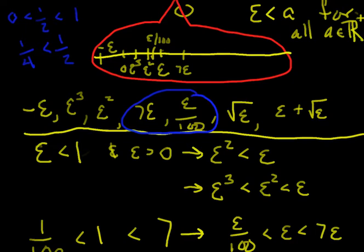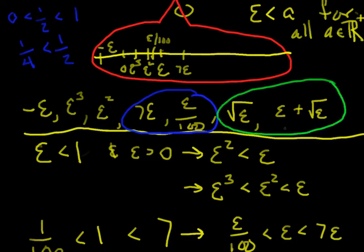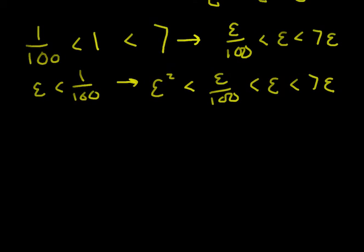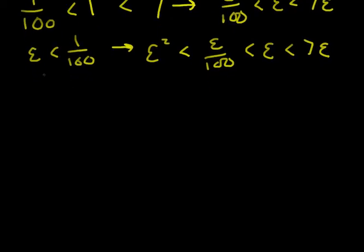Now we've got two more values: square root of epsilon, and epsilon plus square root of epsilon. We need to ask ourselves where these sit in the comparison. Now this definitely takes a little bit more ingenuity, so if this idea didn't come to you when you were working this problem yourself, that's all right.